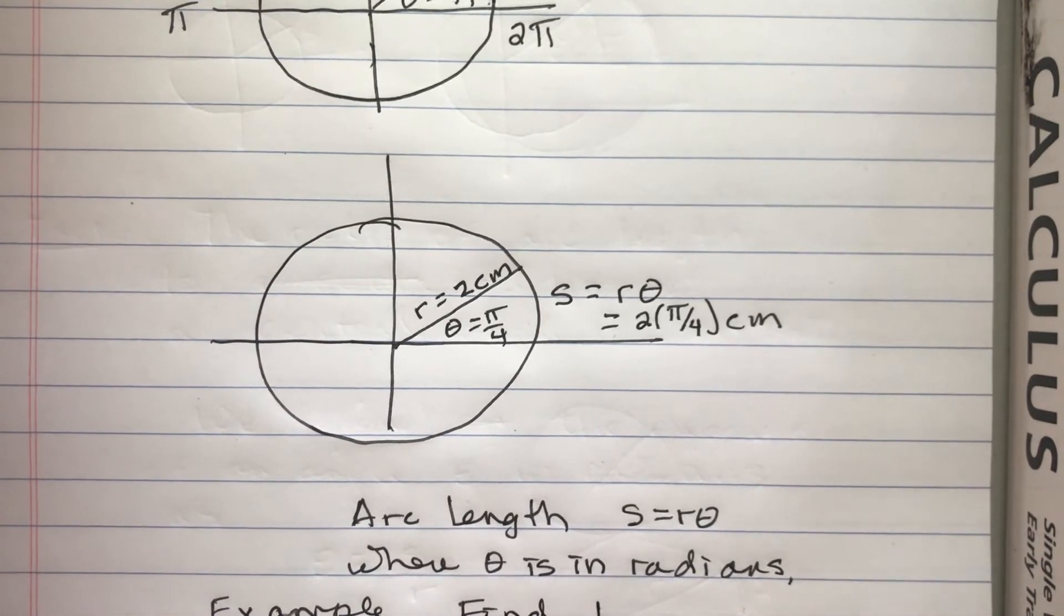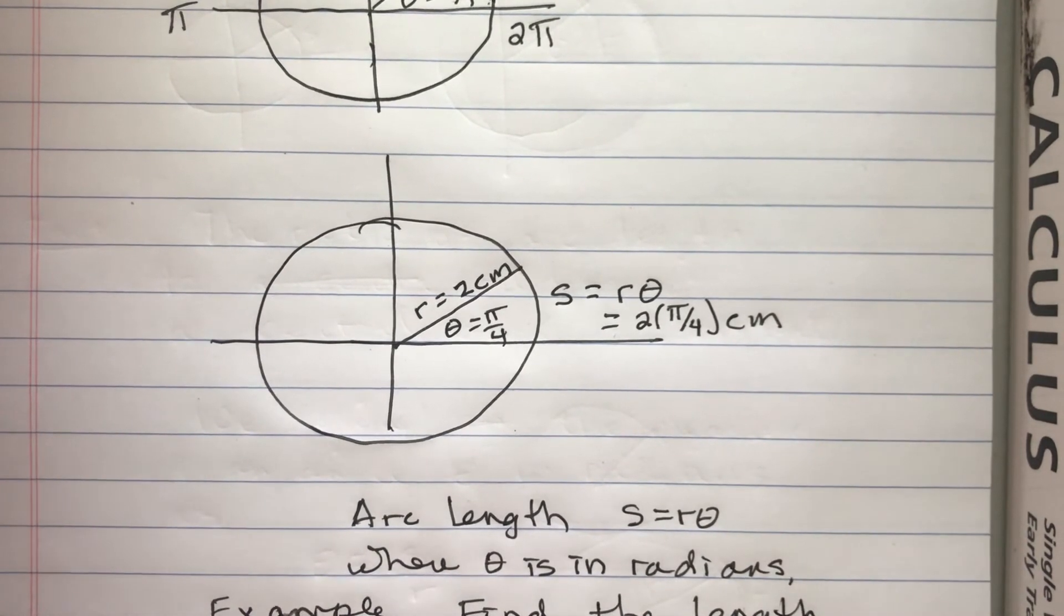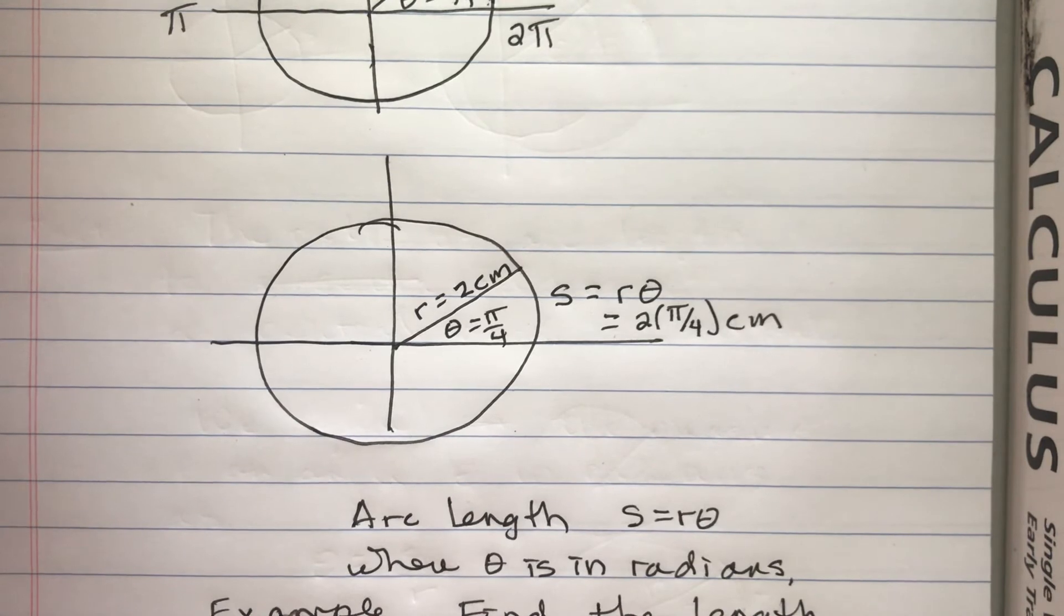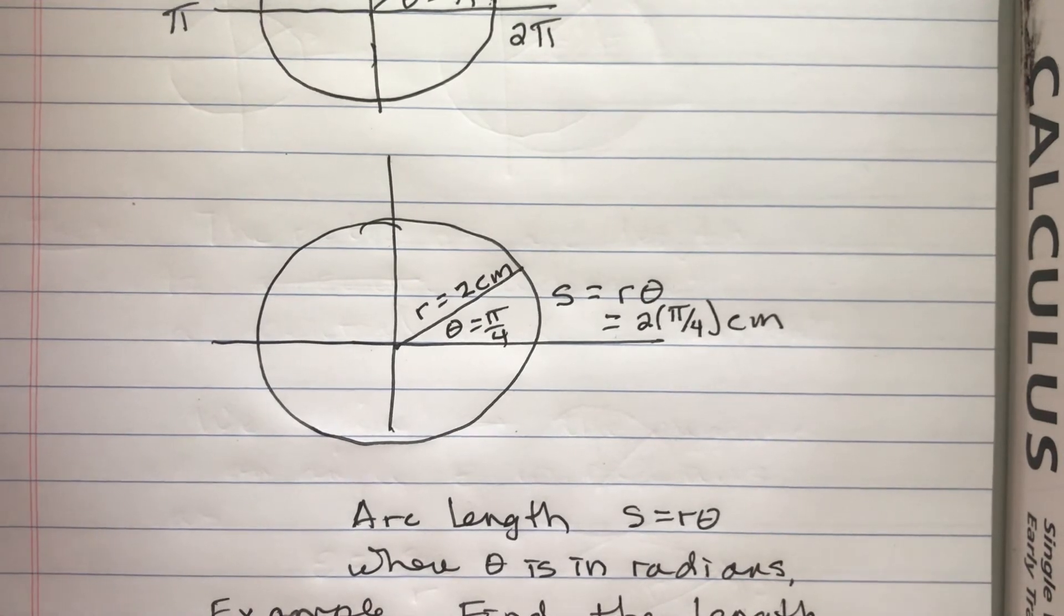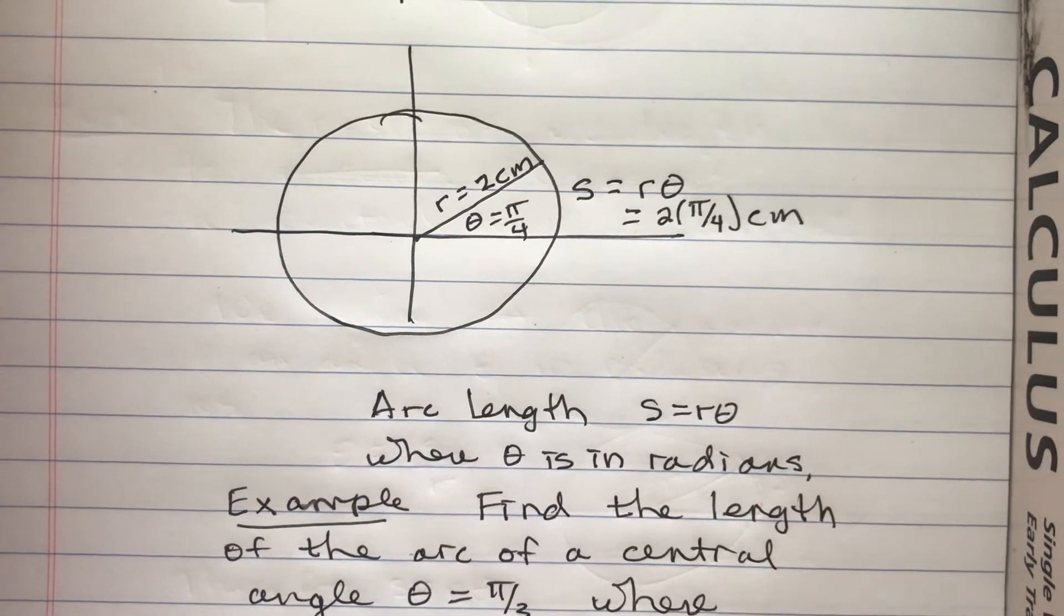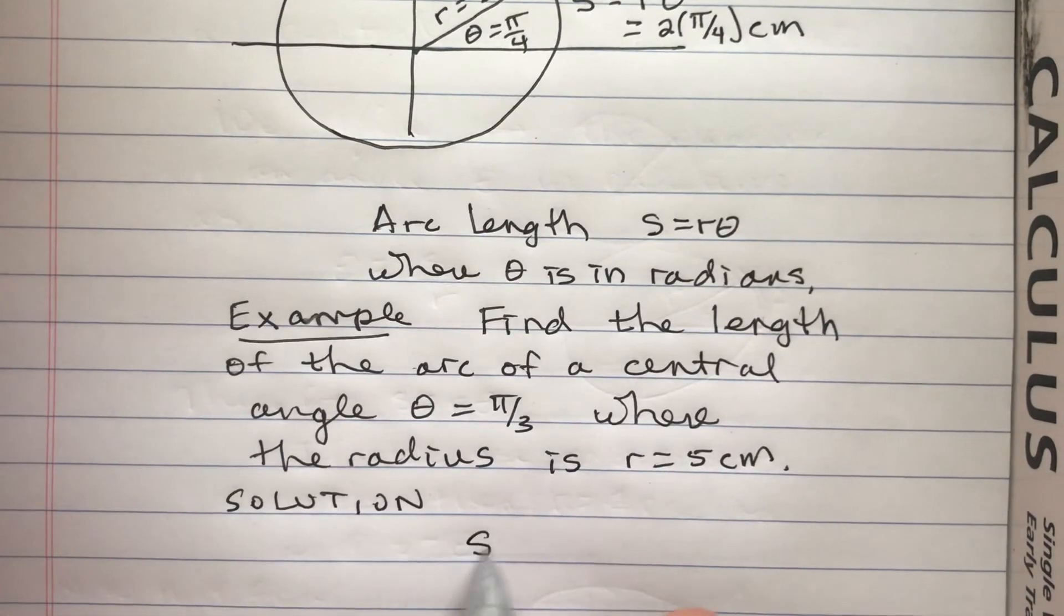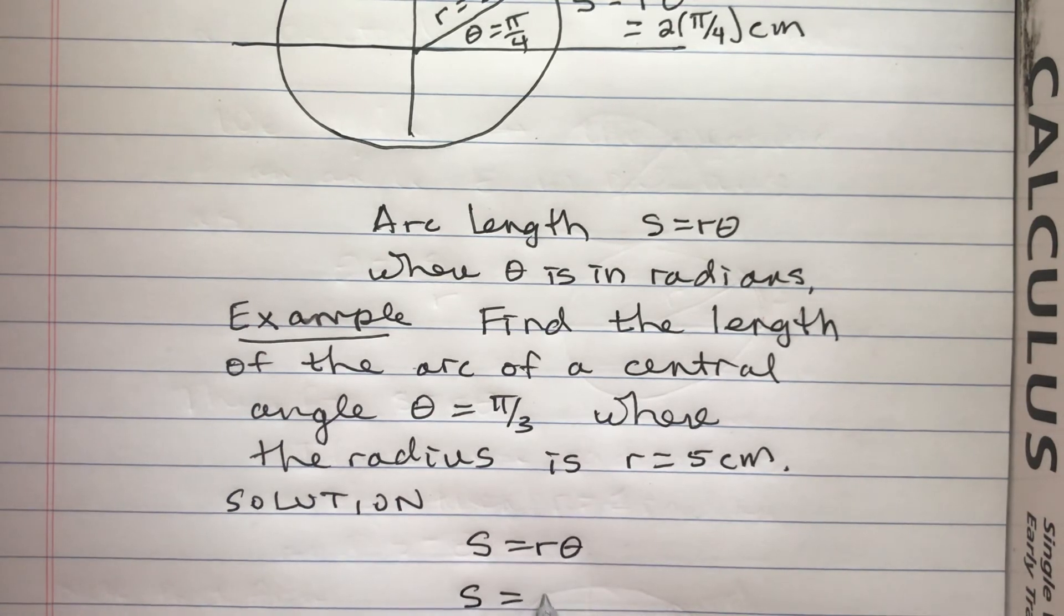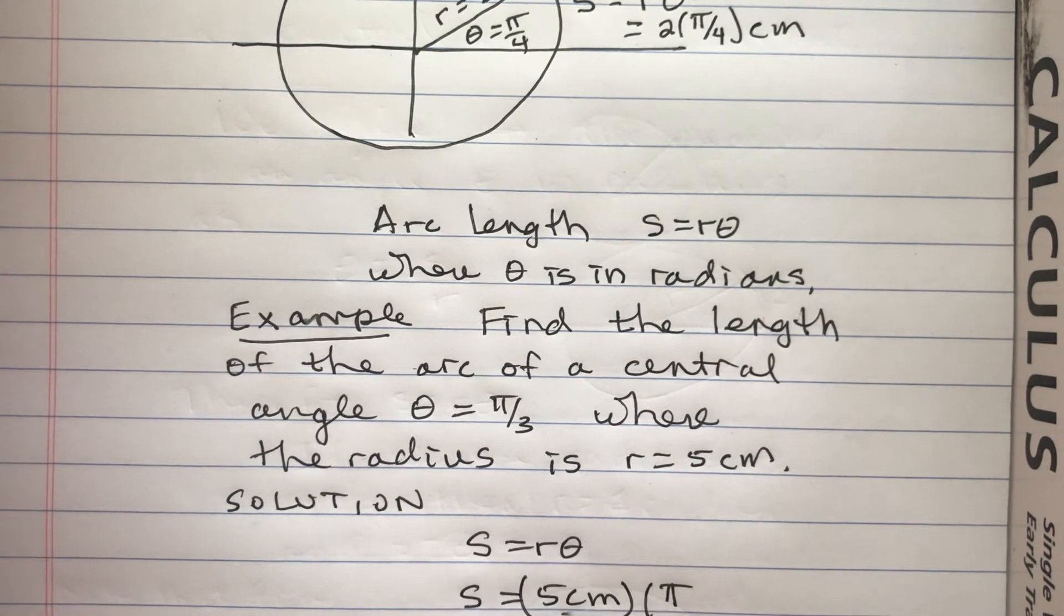Find the arc length. Let's say find the length of the arc of a central angle theta equals pi over 3, where the radius is R equals 5 centimeters. So the solution is, after all that talk, not really that difficult. S is equal to 5 centimeters times pi over 3. So when I write 5 centimeters, if you want to write units, it's 5 centimeters per 1 radian, and then pi is in radians.